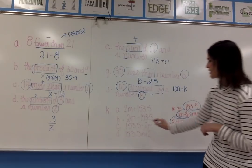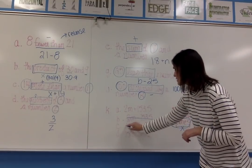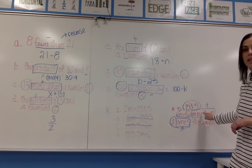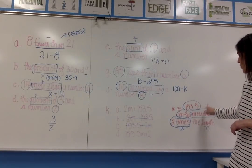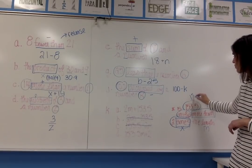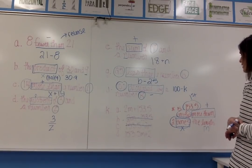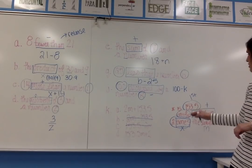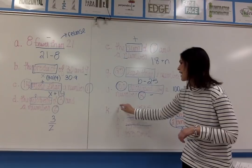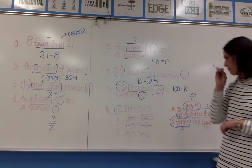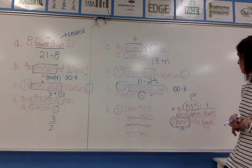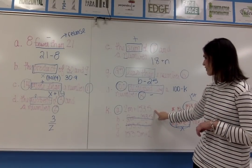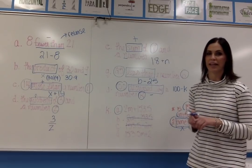So expression A, 2M plus 153.5, would represent 153.5 miles more than two times the length.